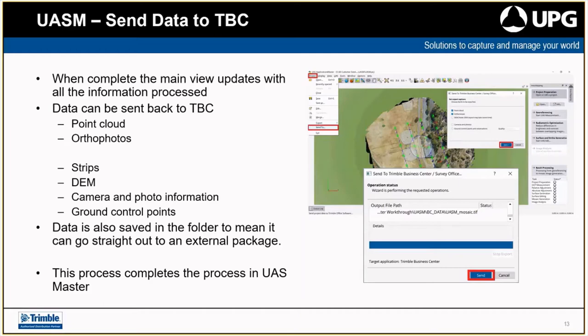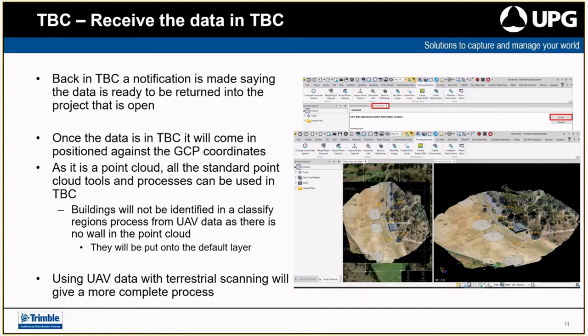At this point you can also go to the folder location and find the DTM and ortho photos and just export that information out without running through TBC if that's what you want. The notification in TBC when it's open would be to accept the incoming data. Accept will start importing the data from UAS Master, and once it's in you'll see the point cloud in TBC and be able to use TBC functionality. The ortho photo will be handled as an ortho photo in TBC — all the traditional steps and processes can now be utilized.